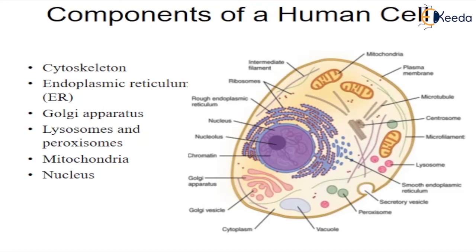Lysosomes and Peroxisomes. These organelles are the recycling center of the cell. They digest foreign bacteria that invade the cell, rid the cell of toxic substances, and recycle worn out cell components. These are single-membrane, oval or spherical cellular organelles, also called microbodies. They contain catalytic enzymes. Peroxisomes are involved in the oxidation of long-chain fatty acids and synthesis of plasma lipids and glycolipids.